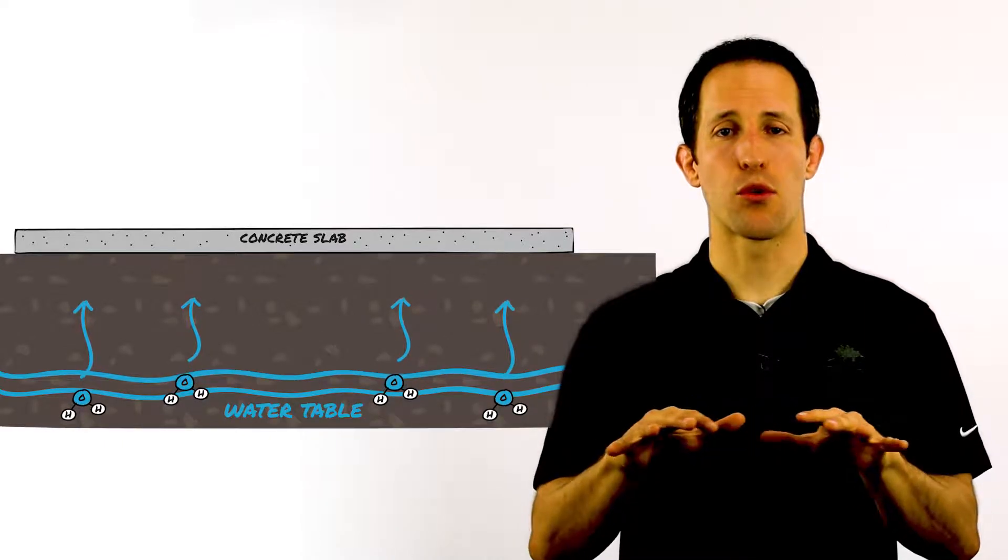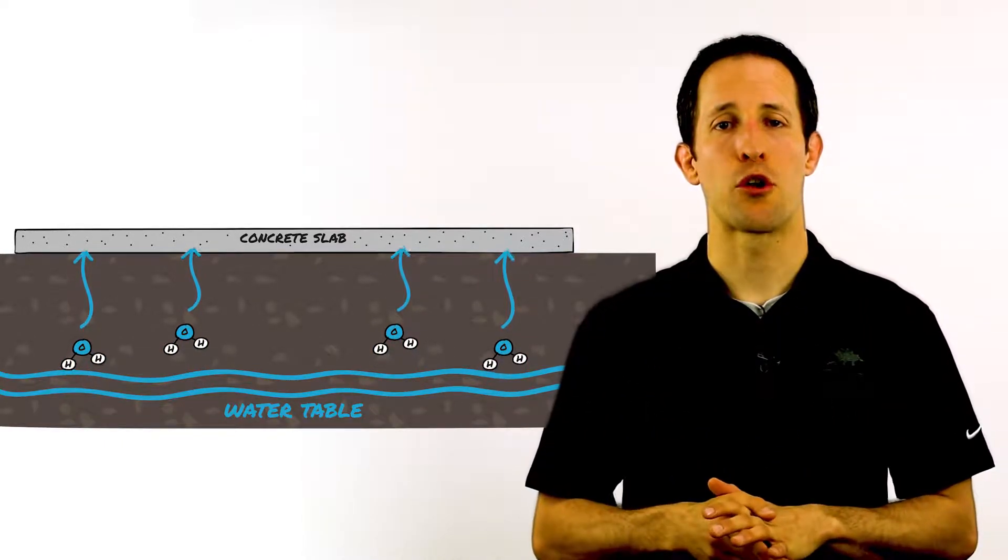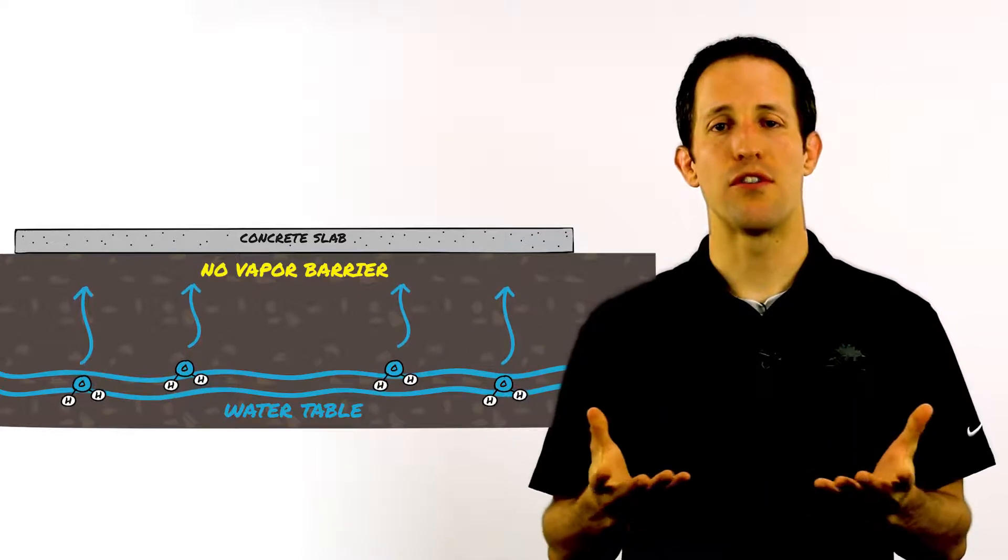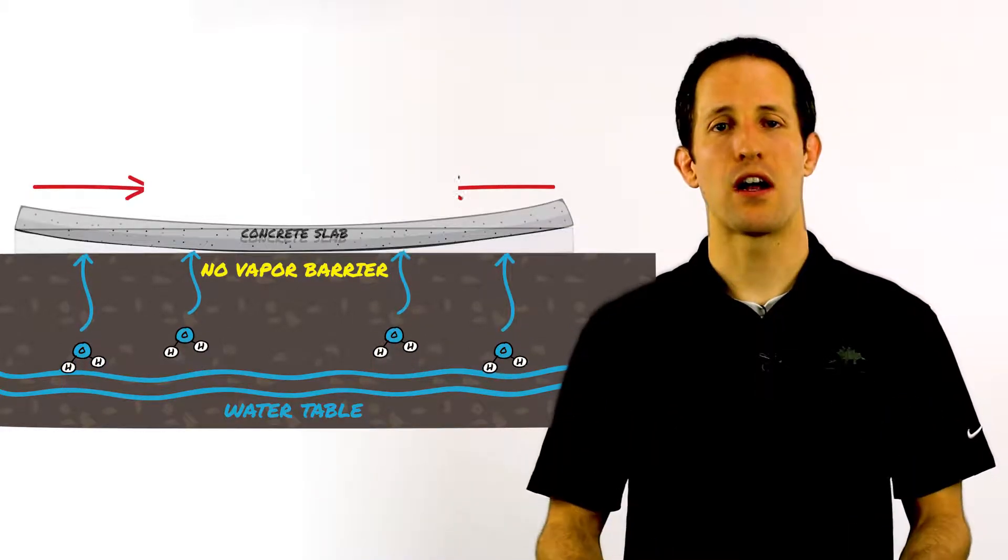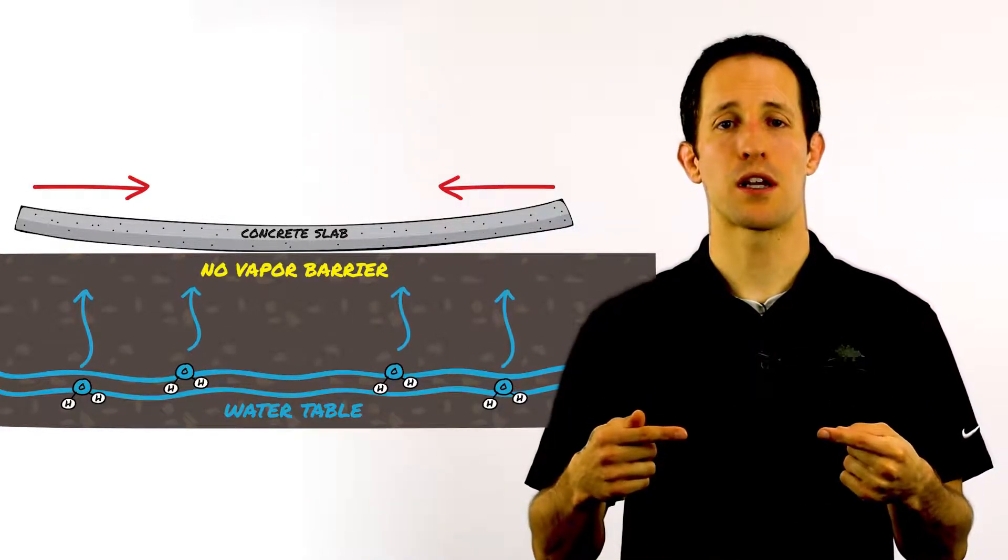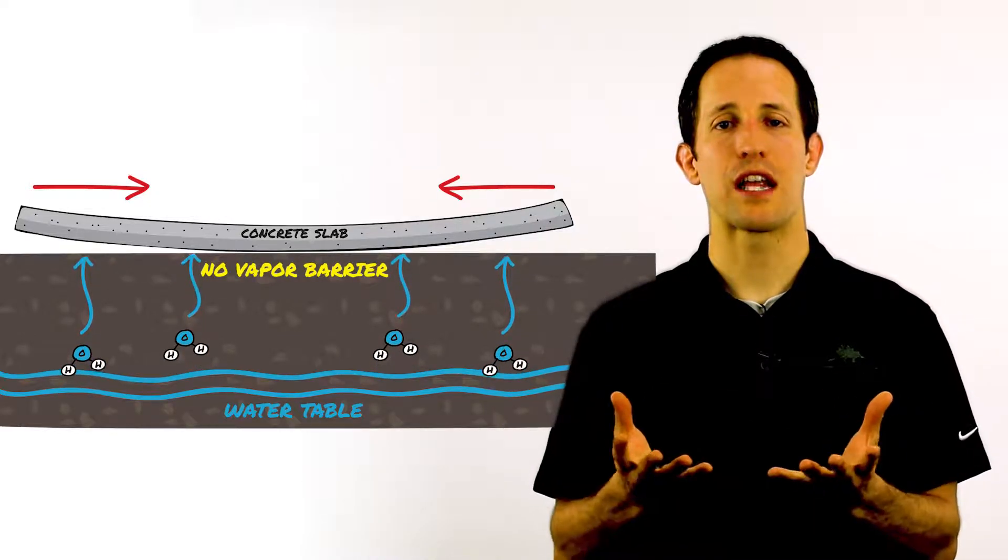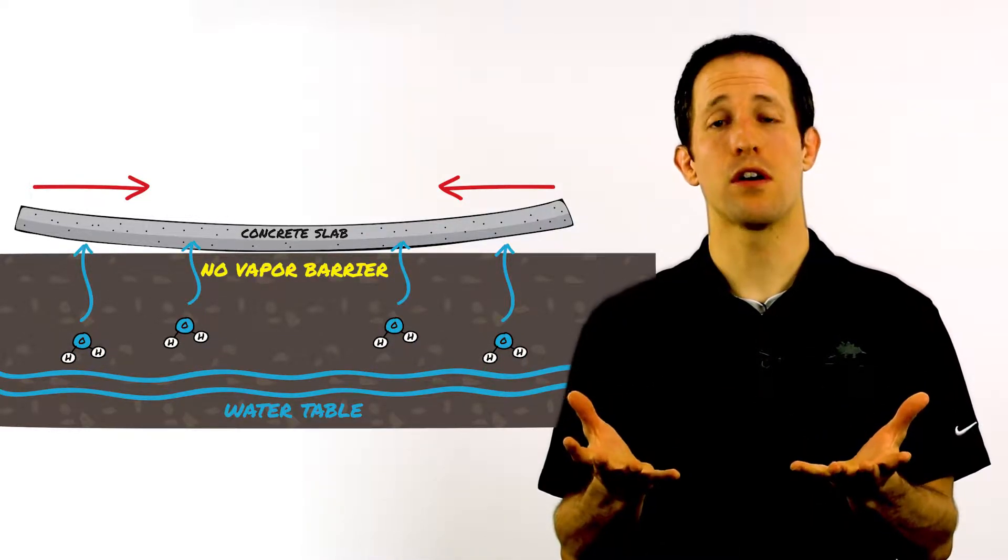However, once you put the floor covering down or the building now begins to operate under normal conditions, if there's no vapor barrier beneath it, we have a constant source of moisture and diffusion up from the subgrade. This will keep the under slab of the concrete wetter for longer.